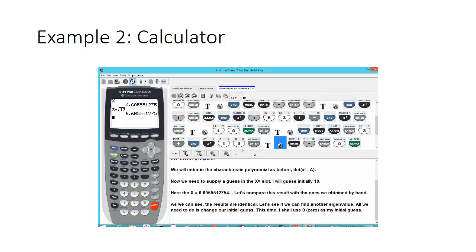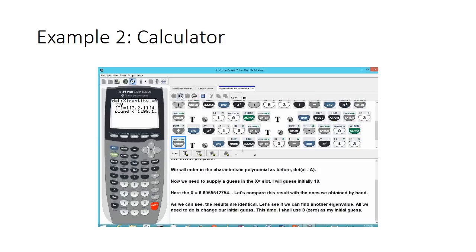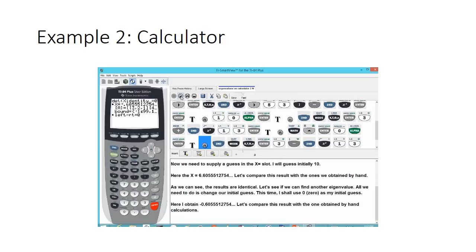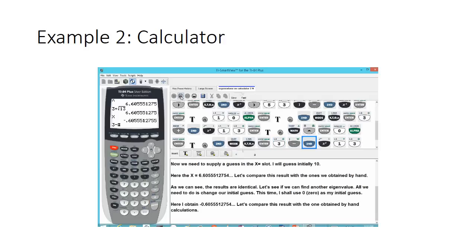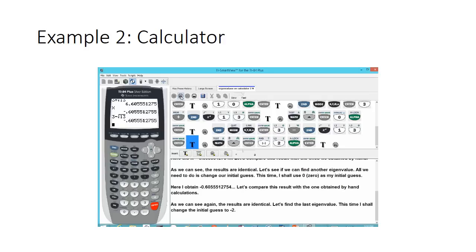Let's find another eigenvalue by changing our initial guess. This time I'll use 0. Back under math, solver, I change the guess to 0 and hit alpha and enter. I obtain negative 0.605. Comparing with the hand calculation by typing 3 minus the square root of 13, the results are again identical.